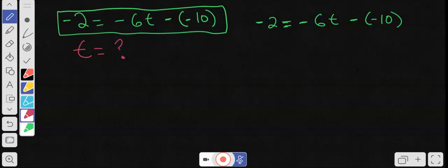So it would look like this: we would distribute that so we could have a different sign. It'd be negative 2 is equal to negative 6t. You distribute this, think of it as if it's a 1 there. Distribute that and it'll be positive 10, plus 10, just like that.